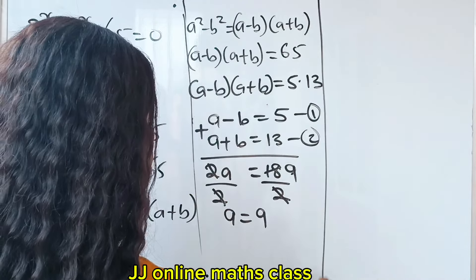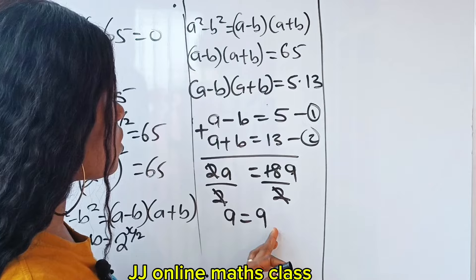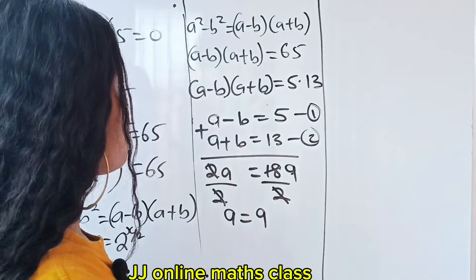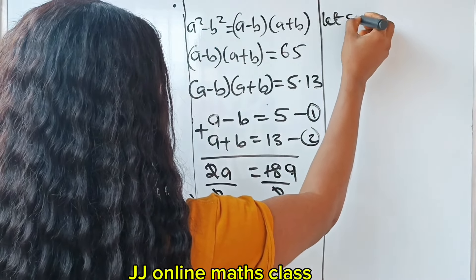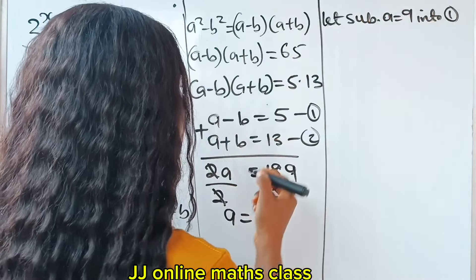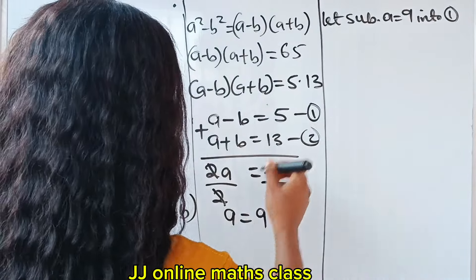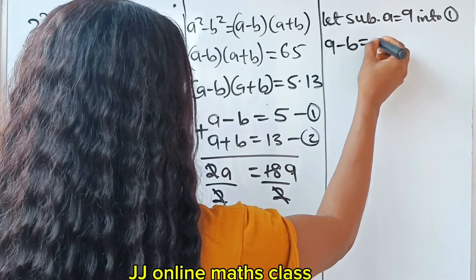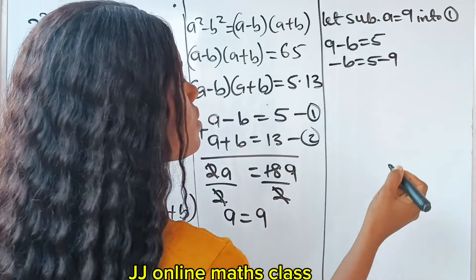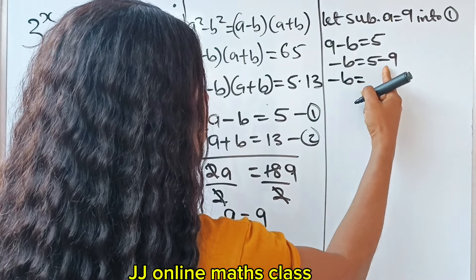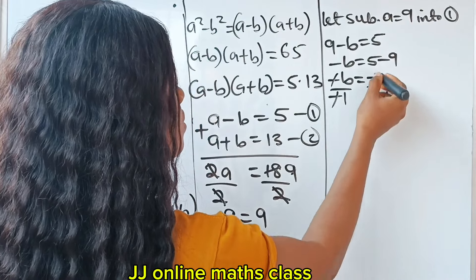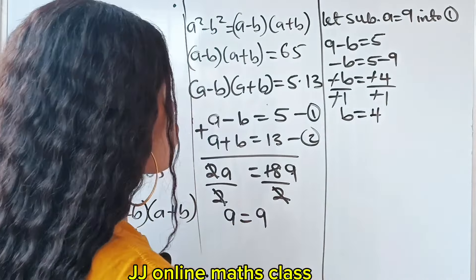Now let's substitute a equals 9 into equation 1. So 9 minus b is equal to 5. That means minus b is equal to 5 minus 9, which gives us minus 4. Dividing both sides by minus 1, we get b is equal to 4.